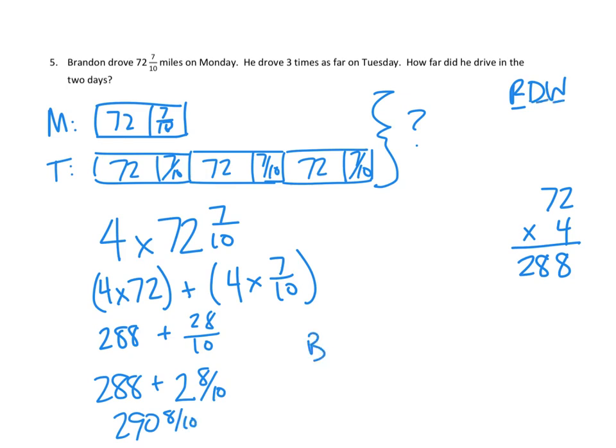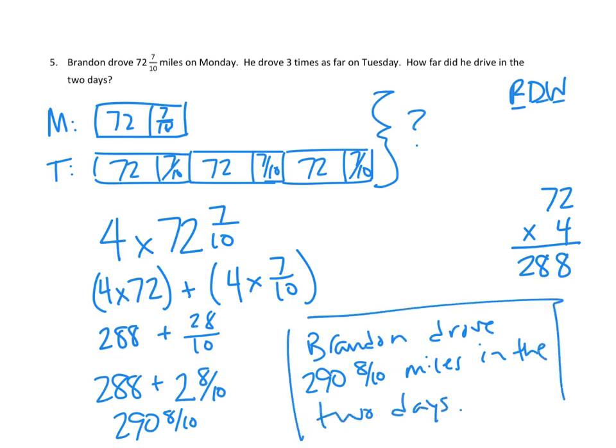And we're now at the write part of our strategy. We have to say, Brandon drove 290 and 8 tenths miles in the two days. And that is our answer, our fully written answer to the question that was asked. This is two of the different types of problems that we've done tonight in our word problems. There are four other ones in your homework, and I hope you have good luck as you attack each one of those. Remember our read, draw, and write strategy, and then remember to distribute when we do our multiplication into both parts of our mixed number. Thanks. I'll see you again next time on Mr. Kong Has Problems.